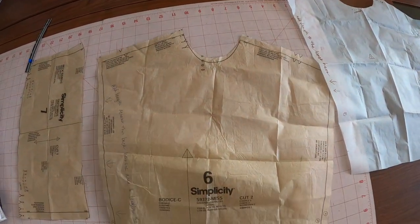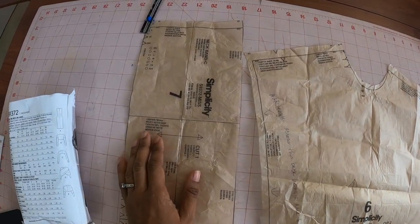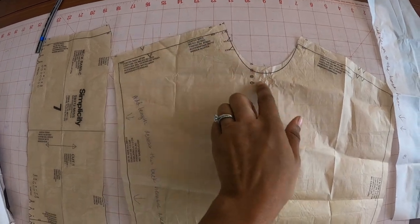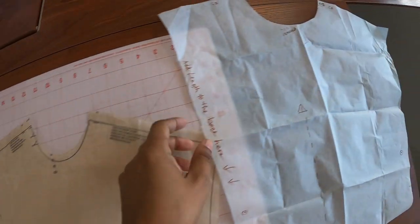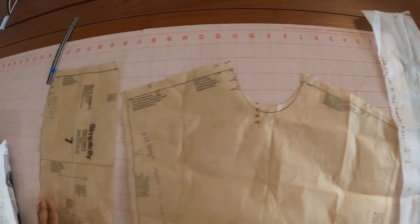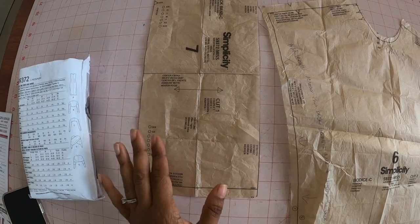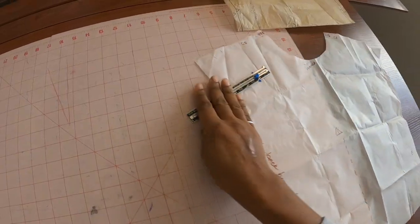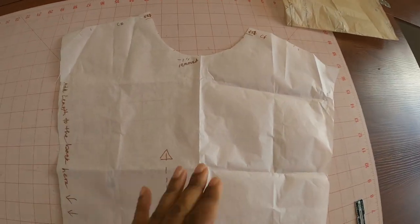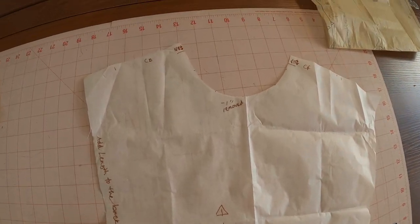Now I made sure to cut out my bodice piece before I cut out the neckband piece, because I needed to measure around the new neckline in order to determine how much I was going to have to lengthen the neckband piece. So you may want to just keep that in mind.